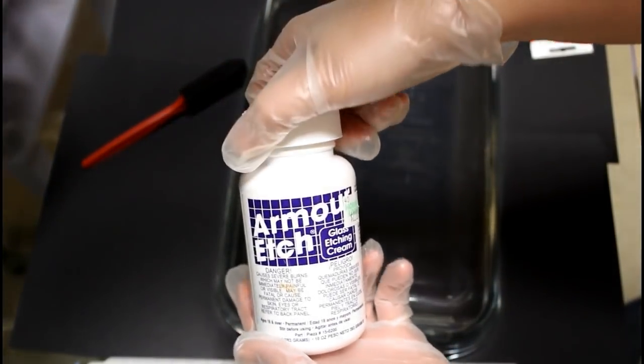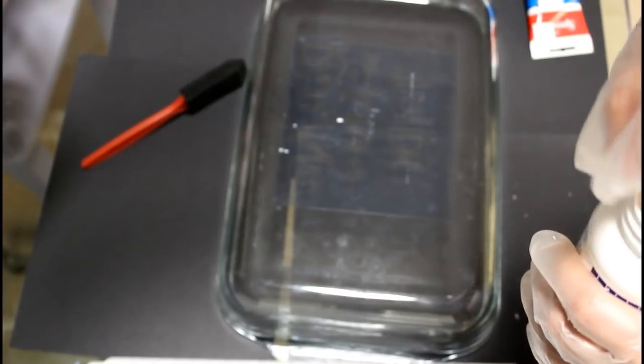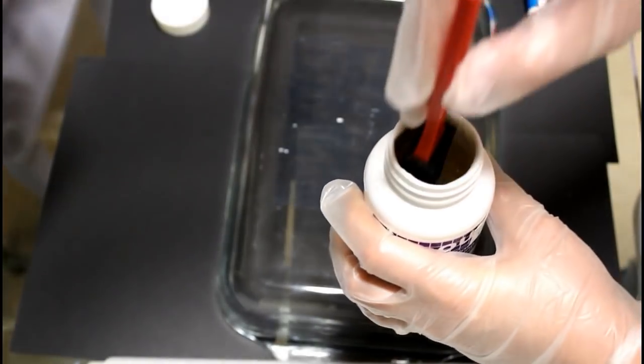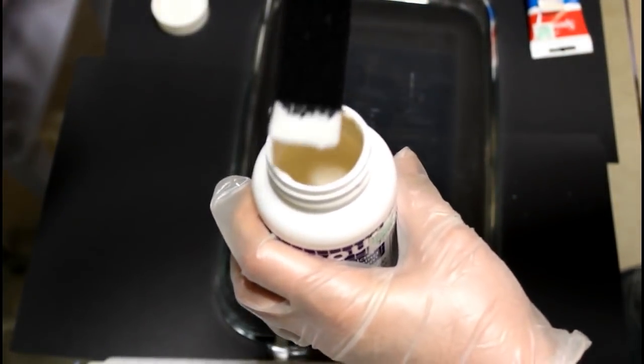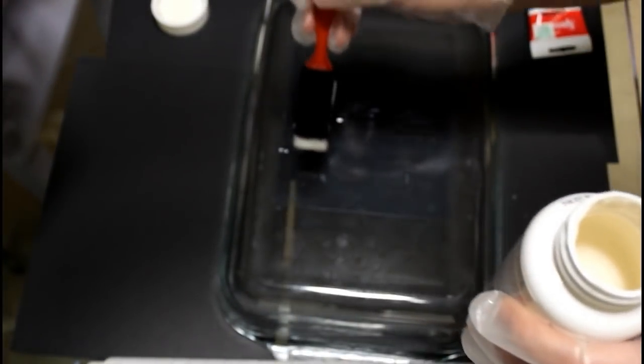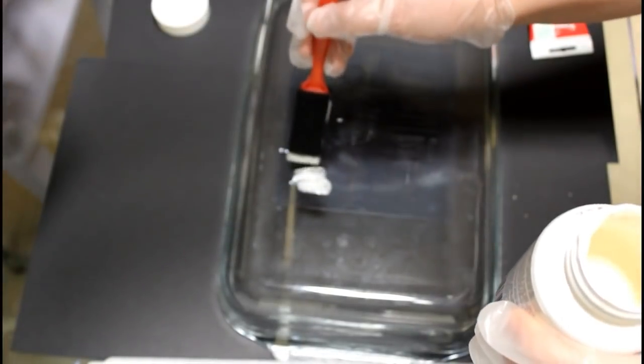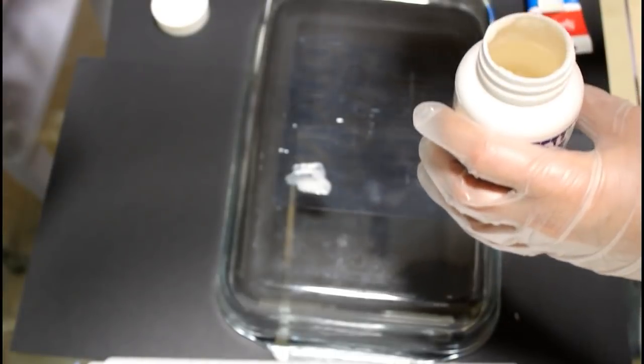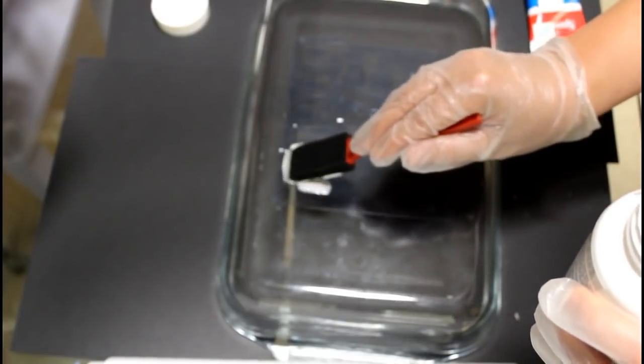And I recommend that you do this in a well ventilated area because this stuff does smell really strong. So the trick with this Armor Etch here, and I just shook it up, the trick is you do not want to paint it on like you're painting. You want to get a good amount on here and you want to dab it on, so you just want to be very generous. Be careful not to get outside of the stencil and you just want to dab it on.